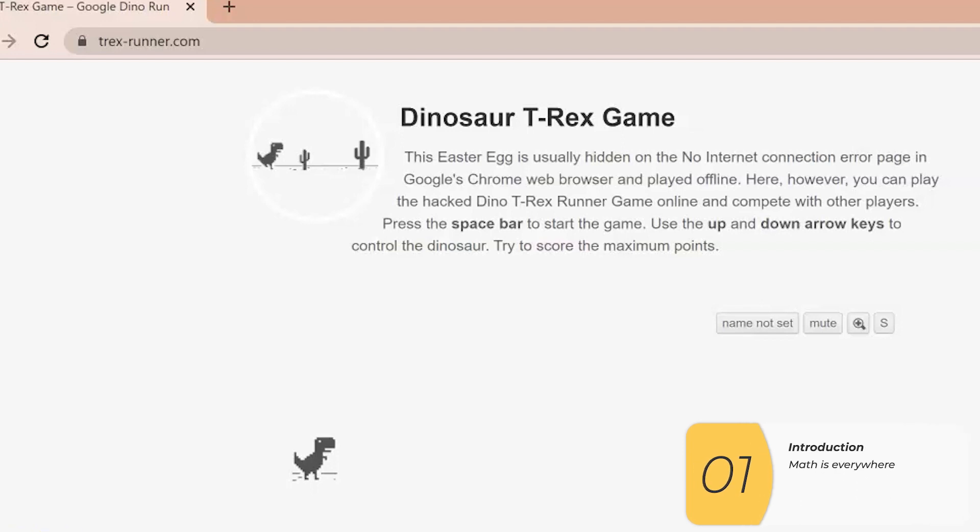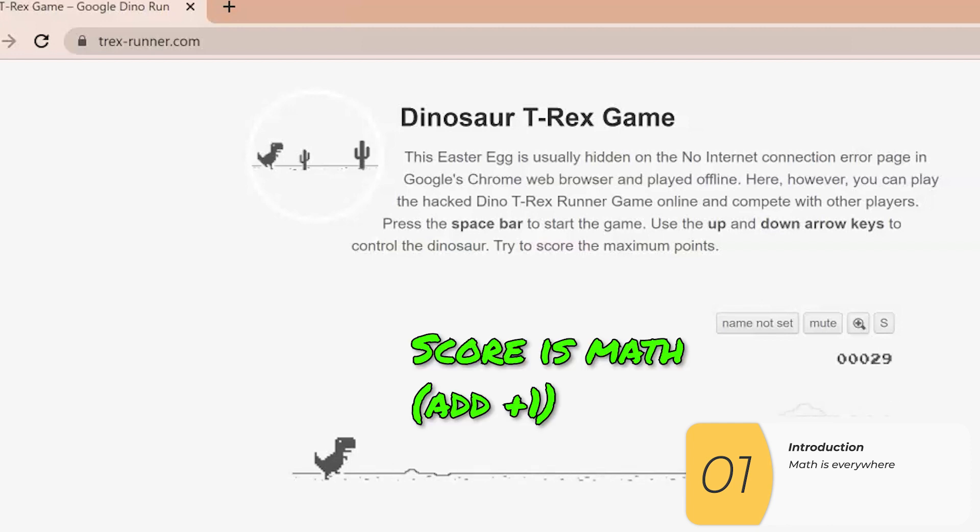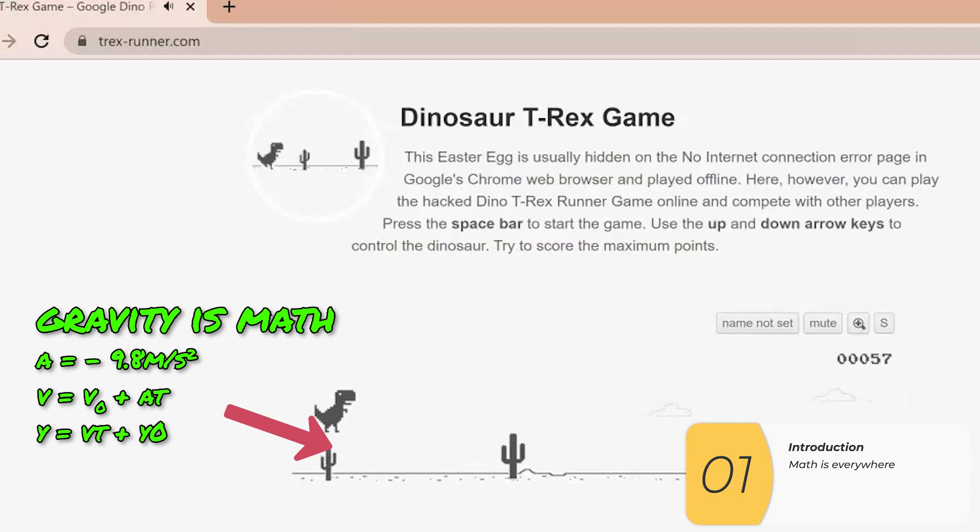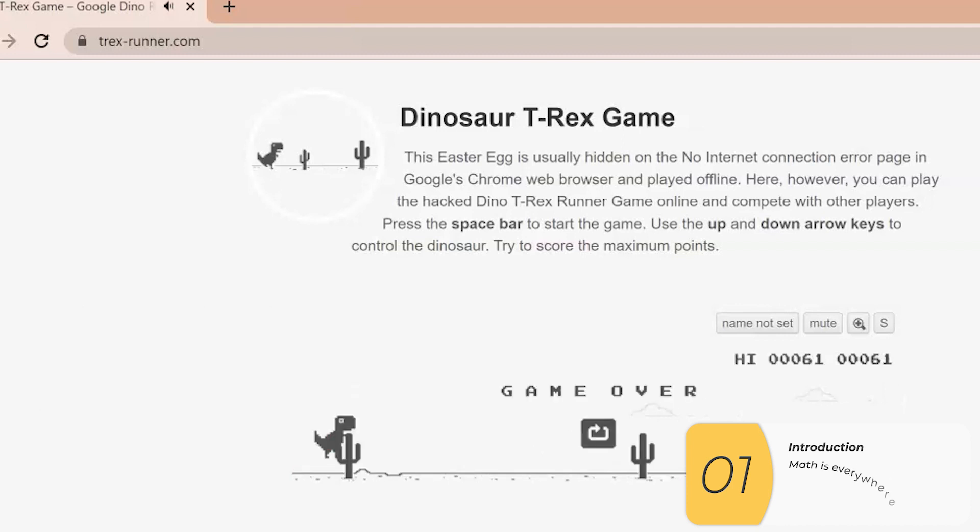So you may be asking, why am I doing math? And here's why. Math is everywhere. Even in this run dino run game, there is math. The score, every second you're adding one, that's math. Gravity, when the dino jumps up and it falls down, that's math too. Math is everywhere in computer science.